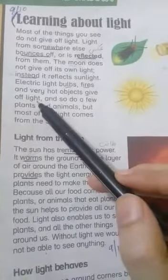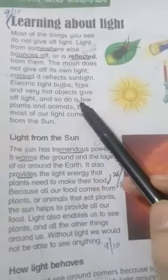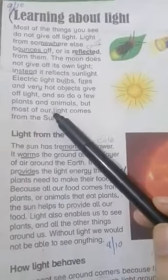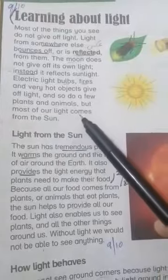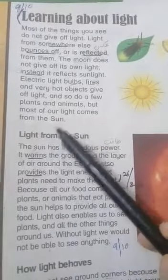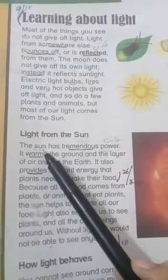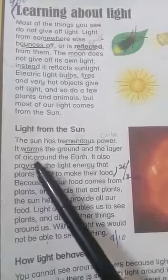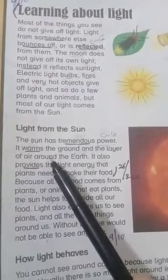And so do a few plants and animals, but most of our light comes from the Sun. The Sun has tremendous power; it warms the ground and the layer of air around the earth.